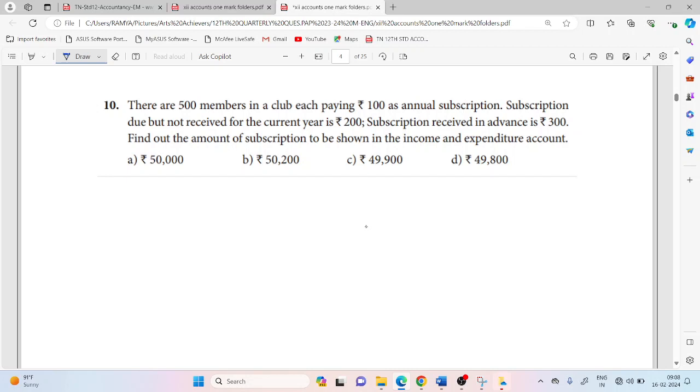So, there are 500 members in a club each paying Rs.100 as annual subscription. Subscription due but not received for the current year is Rs.200. Subscription received in advance is Rs.300. Find out the amount of subscription to be shown in the income and expenditure account.